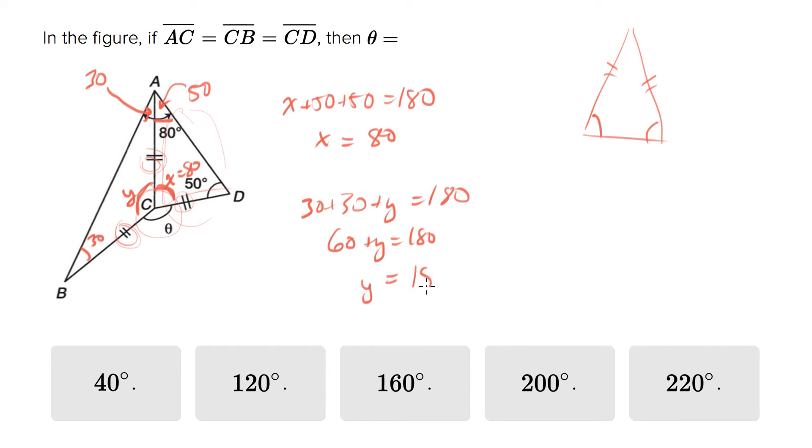So if X is 80 and Y is 120, and X plus Y plus theta equals 360, we can plug in 80 plus 120 plus theta equals 360, and that is 200. So theta equals 360 minus 80 minus 120, which is 160.